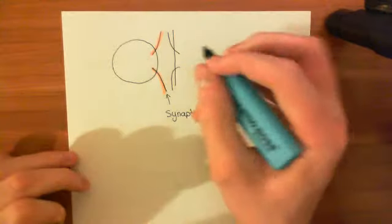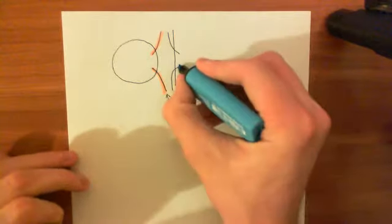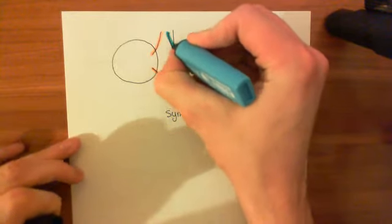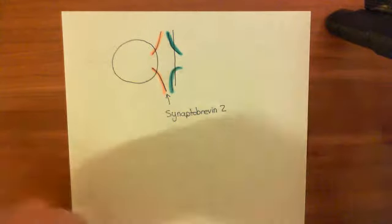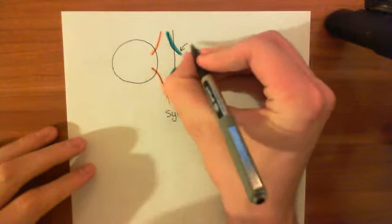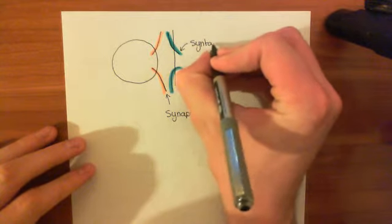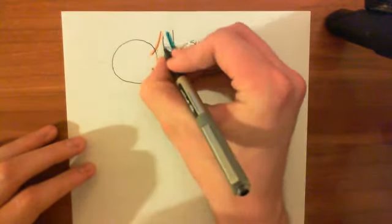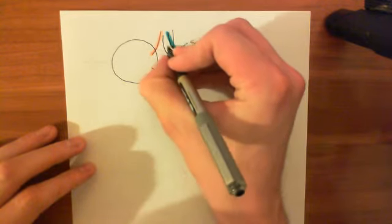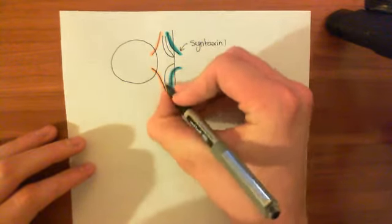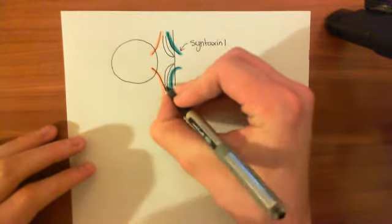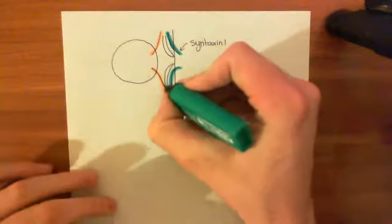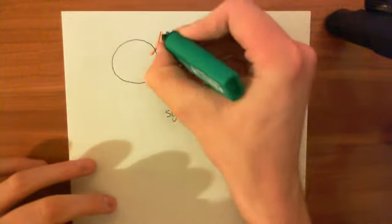This other SNARE protein here, which is in the membrane of the cell — in the plasma membrane — is known as syntaxin-1, shown in blue. And then finally, another SNARE protein that's a T-SNARE — it's in the target membrane, i.e., the plasma membrane in this case — and it provides two alpha helices into this core SNARE complex. This is SNAP25, and we'll have SNAP25 in this turquoise colour.